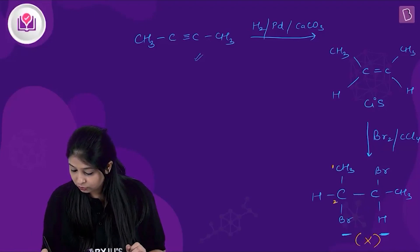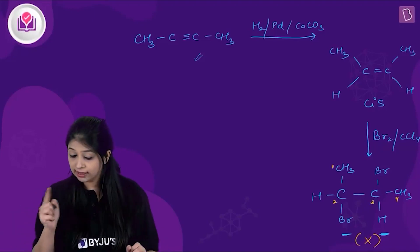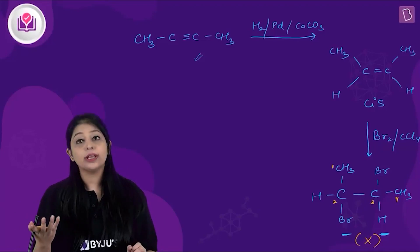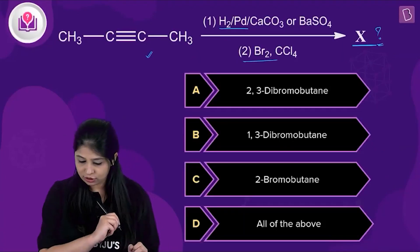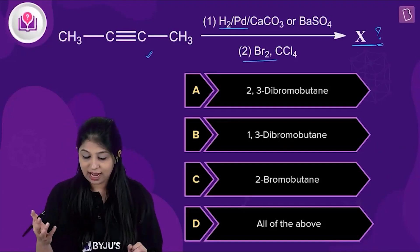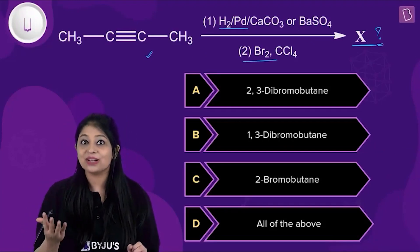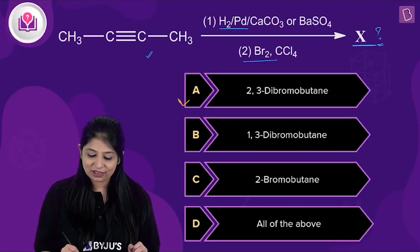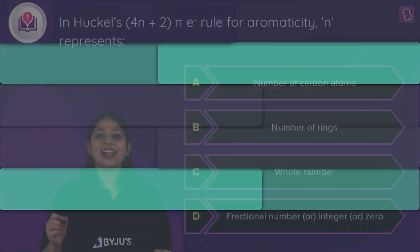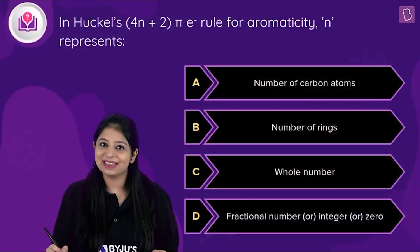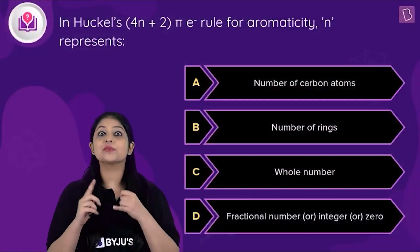This is our product X. Numbering the carbons: carbon 1, 2, 3, and 4 — this is 2,3-dibromobutane. Checking the options, the first option is 2,3-dibromobutane, which matches what we found. So the correct option is A.